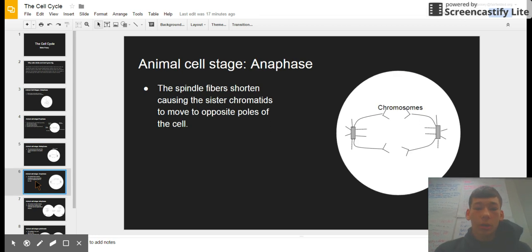Anaphase. The spindle fibers shorten, causing the sister chromatids to move to the opposite poles of the cell. Chromosomes are these right here, breaking apart and withdrawing from each other. Here's the centrioles.